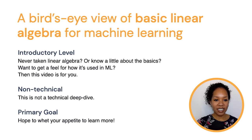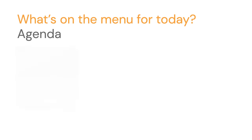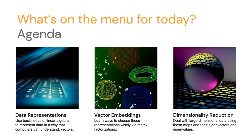So what's on the agenda for today? There are a lot of things we could discuss, but I've chosen three topics that I think will be useful — that appear a lot in machine learning and can also be a segue to discuss ideas in linear algebra. Those topics are data representations, vector embeddings, and dimensionality reduction. If you've never heard of these terms before, or you have but aren't really sure what they mean, that's okay. I'd like to use these ideas in machine learning as a vehicle to discuss the basic linear algebra behind them.